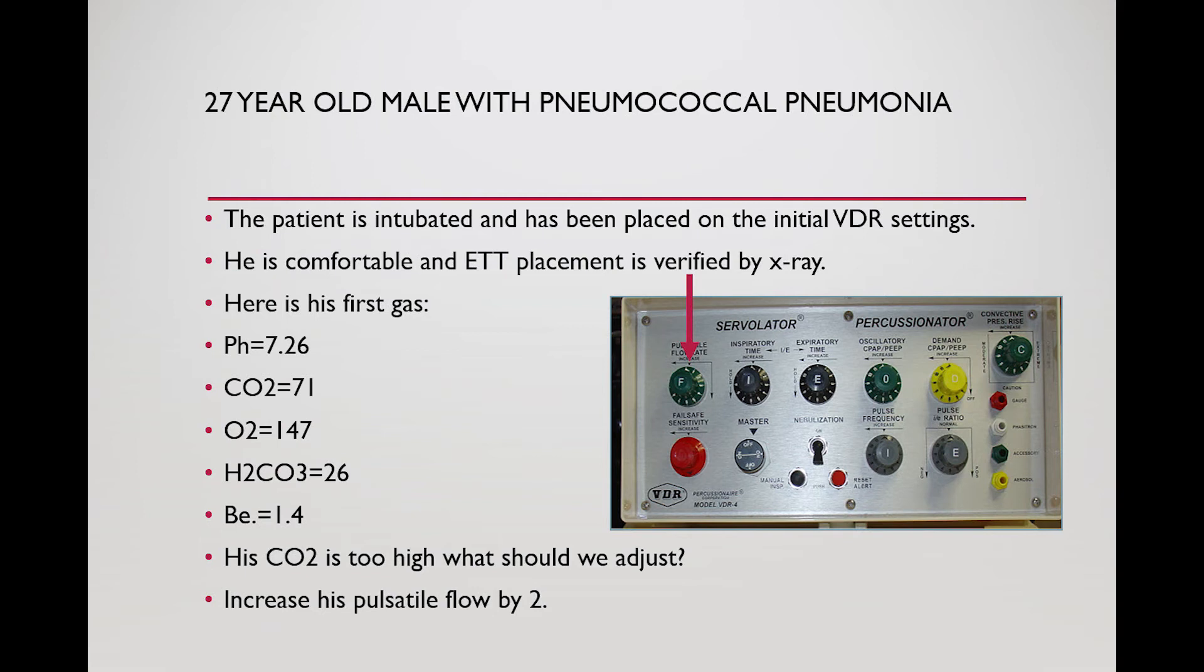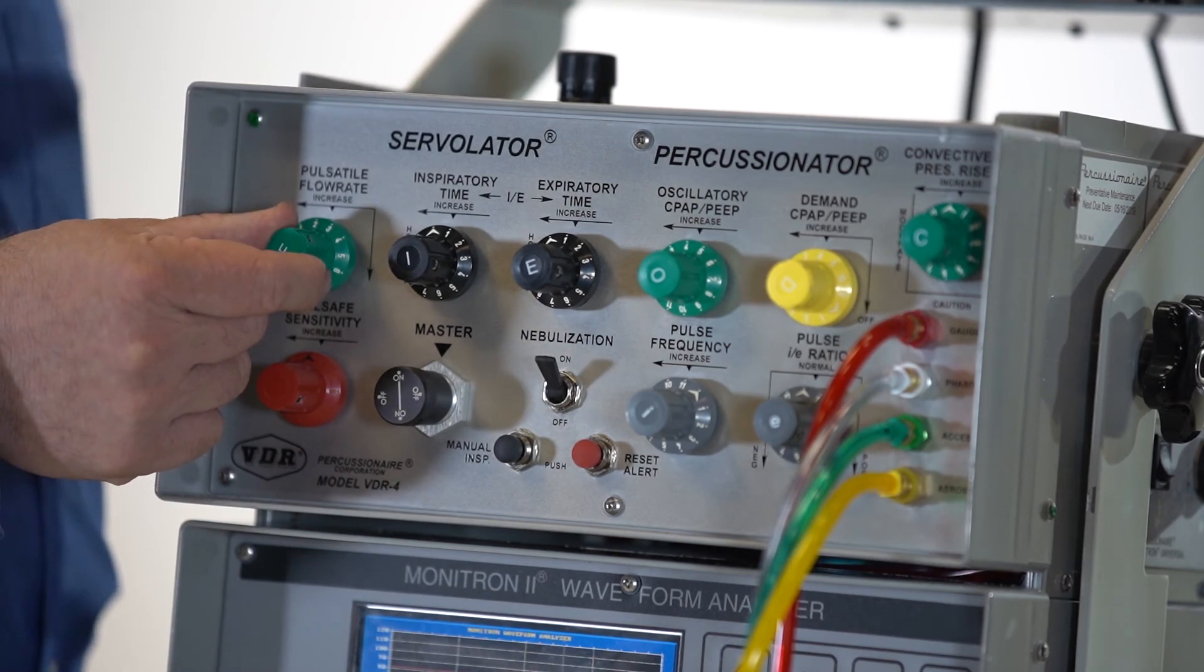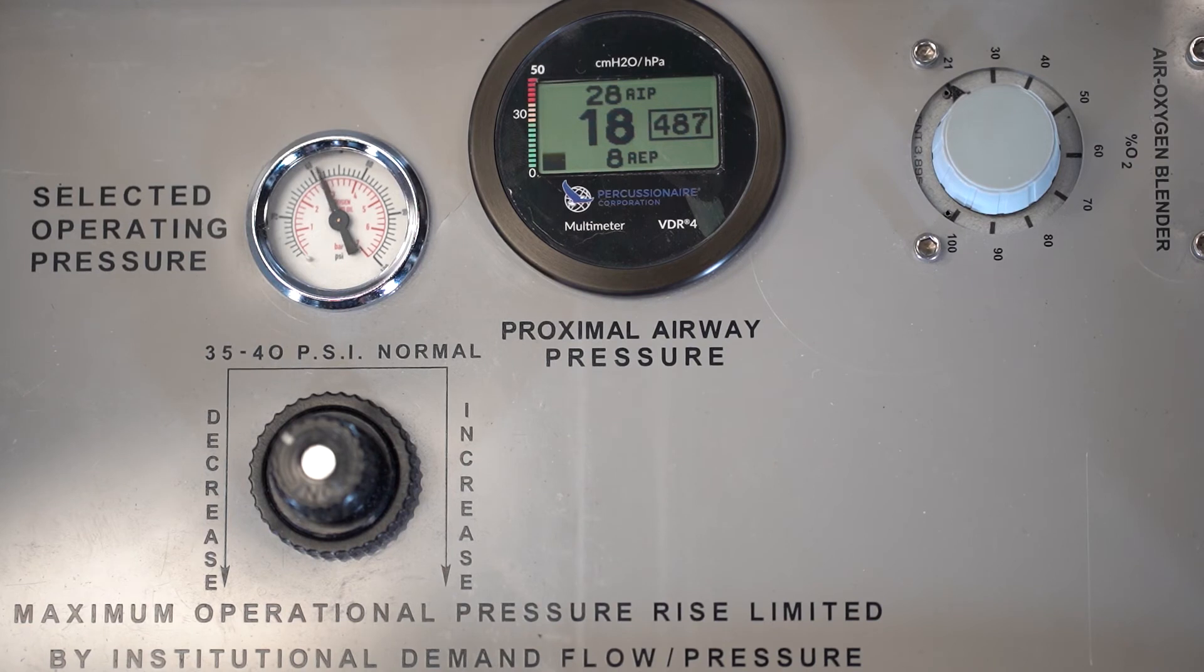So our patient's intubated, been placed on the initial settings. He's comfortable with an ET tube placement verified by x-ray. Here's his first gas, 7.26, 71, 147, bicarb 26 base excess 1.4. His CO2 is too high. So what would I adjust? I'm going to simply adjust pulsatile flow by 2. I'd come over to here. I know that I was at 26. So I'm going to adjust that to 28. I now see that my pulsatile flow is 28. That would be making an adjustment. So I've made my first clinical adjustment. It's settled. I now would wait for an hour or so and maybe get another blood gas depending on how bad the blood gas is. Let's see how our patient's doing in this scenario.